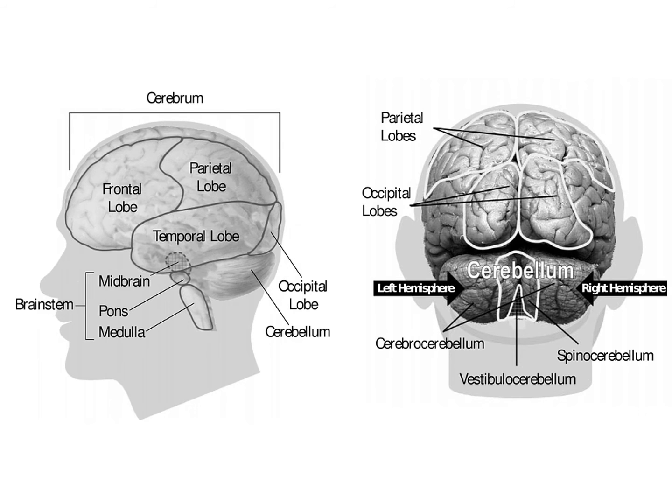Brain scans have shown that the hippocampus and other parts of the temporal lobe combined with the frontal lobe are involved in episodic memories. The temporal lobe is linked with semantic memories. And the motor cortex combined with the cerebellum, which is involved in fine motor skills, is involved with procedural memory.